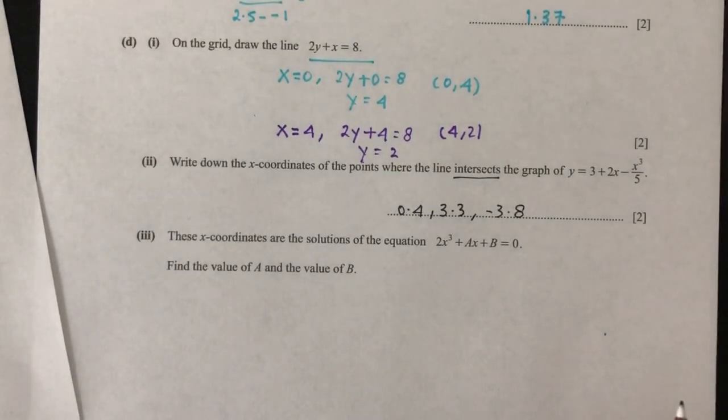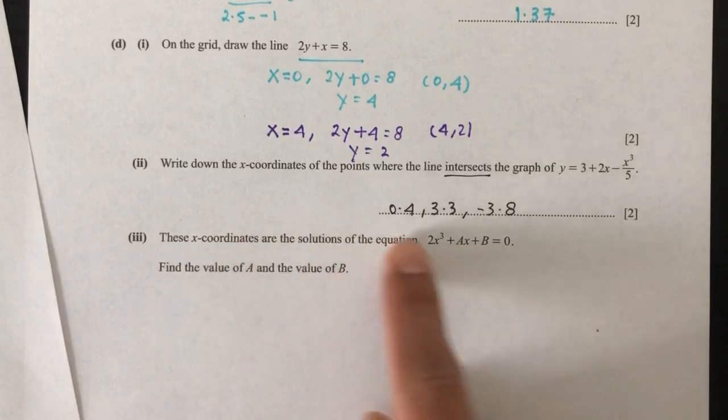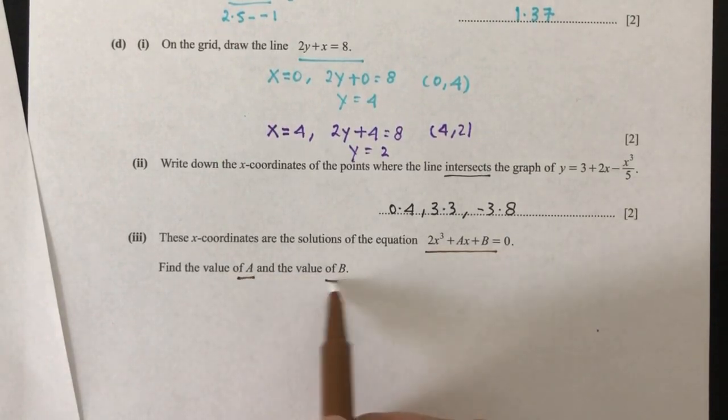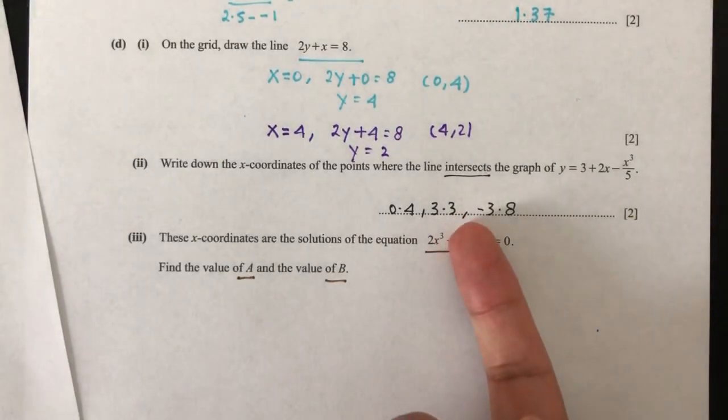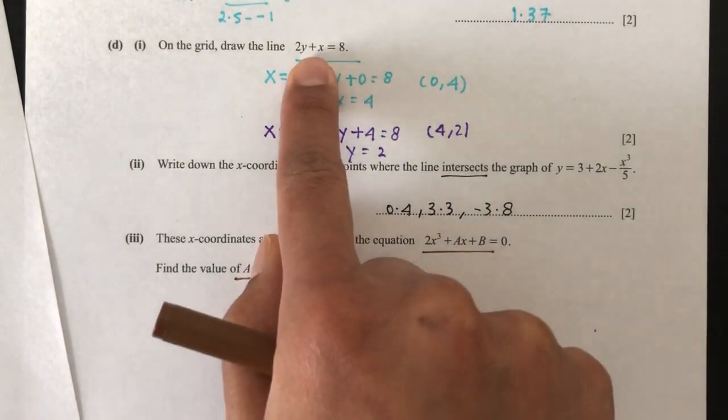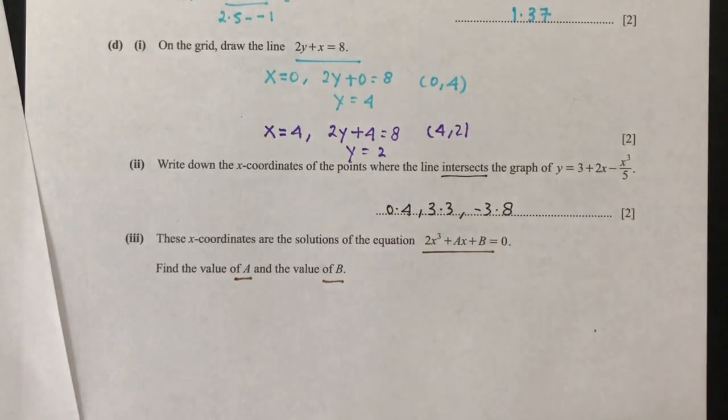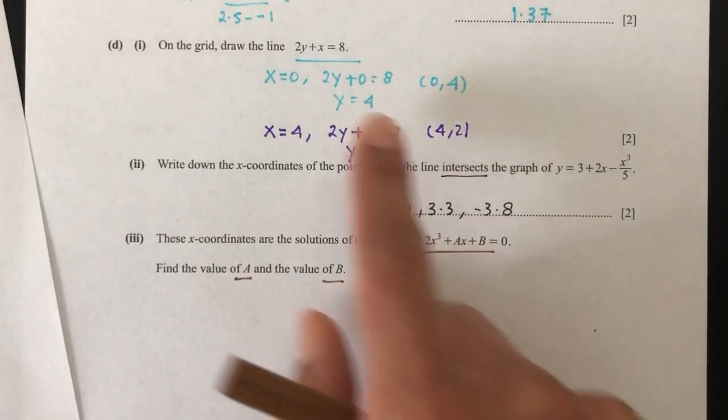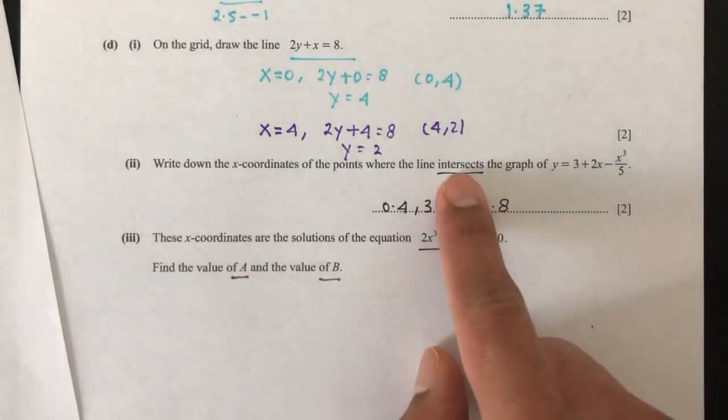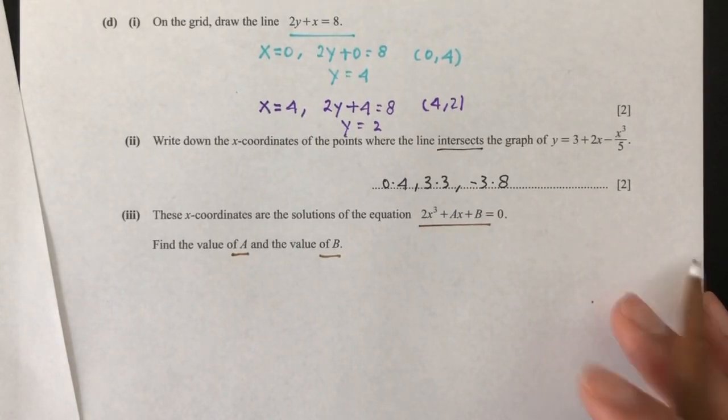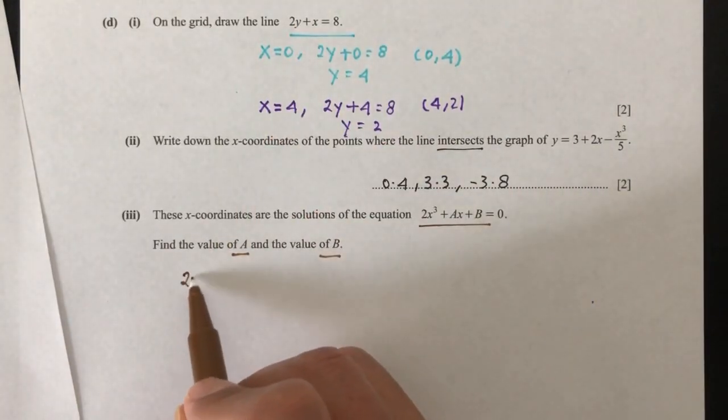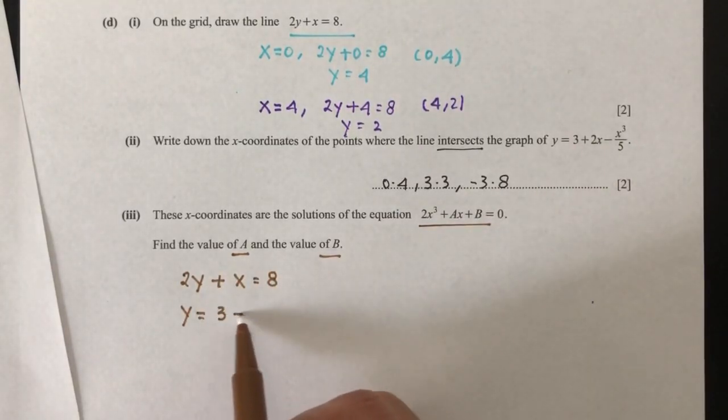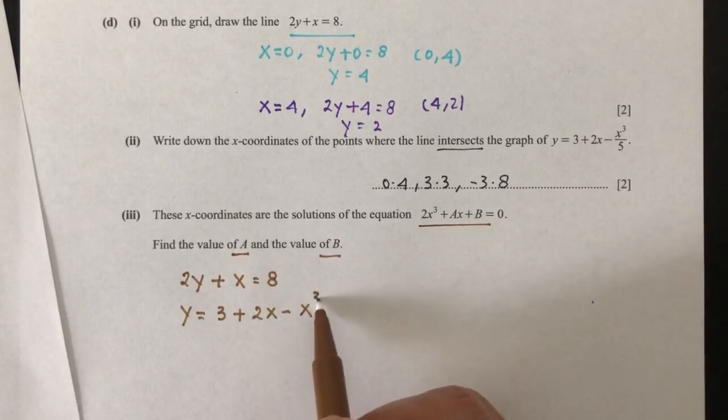Now let's move on to the last part of the question. It says these x coordinates are solutions to this equation. Find the values of a and b. So my question is, how did you find this x coordinate? You would say I had to draw this line, and when they intersect, I had those x coordinates. So it means that these values were obtained by the intersection of the line and the curve. So whenever it's an intersection, it means that we have to solve them simultaneously.